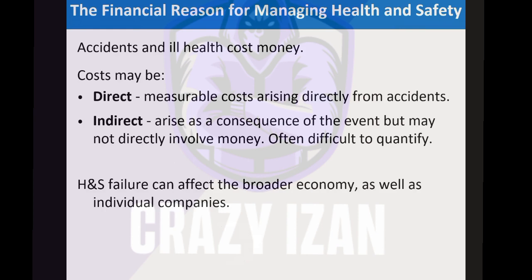Financial costs can be direct or indirect. Direct costs are measurable costs arising directly from accidents, such as medical costs, property damage, and hospital treatment. Indirect costs arise as a consequence of the event but may not directly involve money and are often difficult to quantify — these include loss of labor, loss of productivity, fines, penalties, and loss of future business. Health and safety failures can affect the broader economy as well as individual companies.